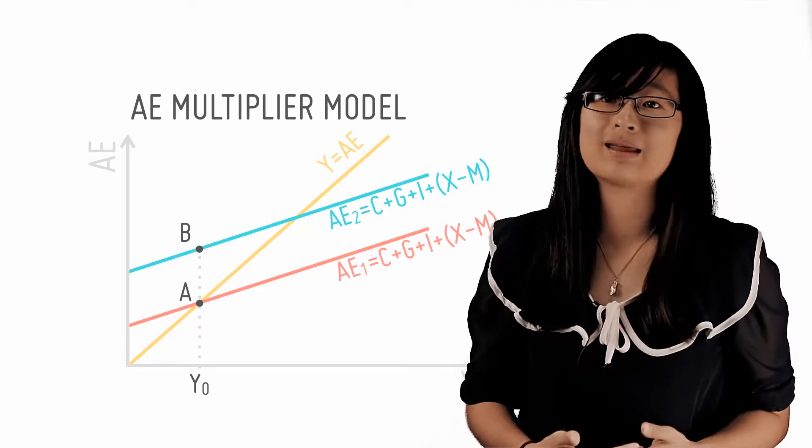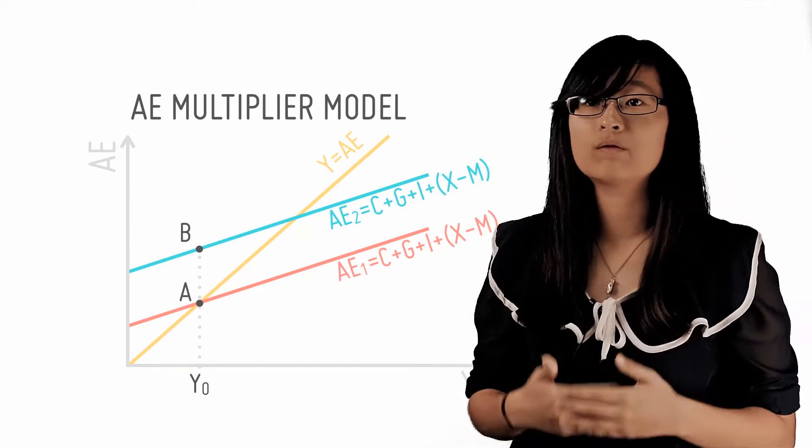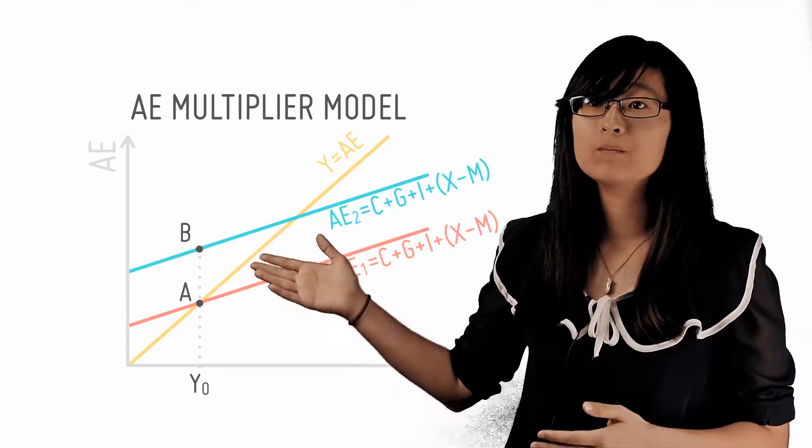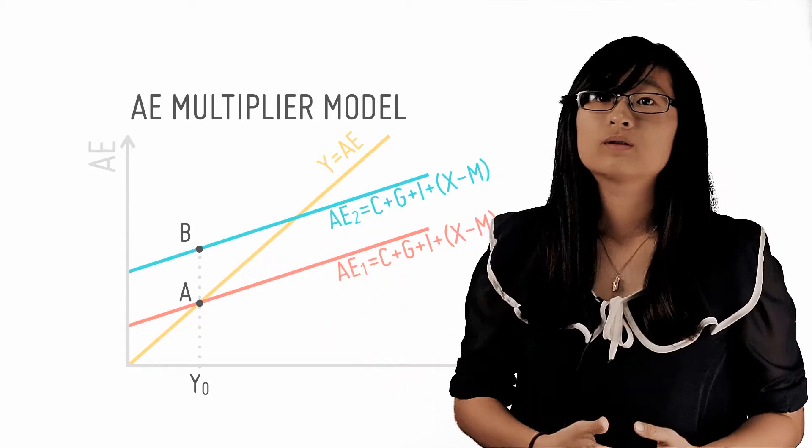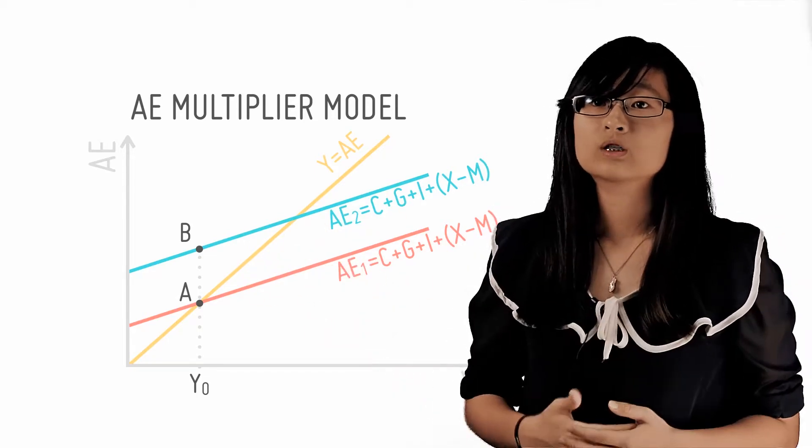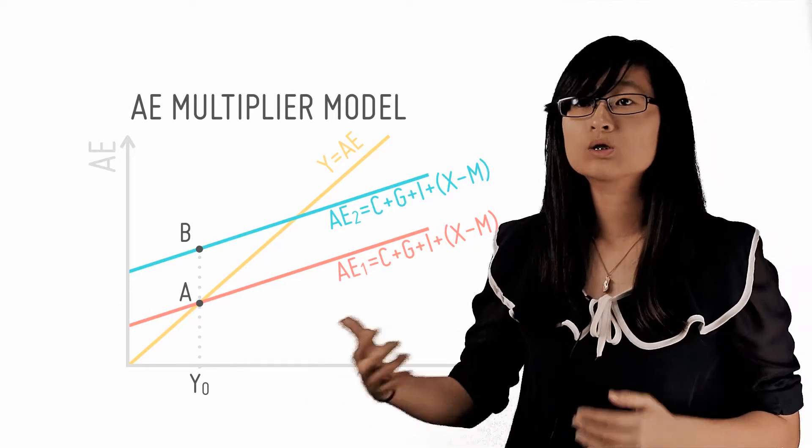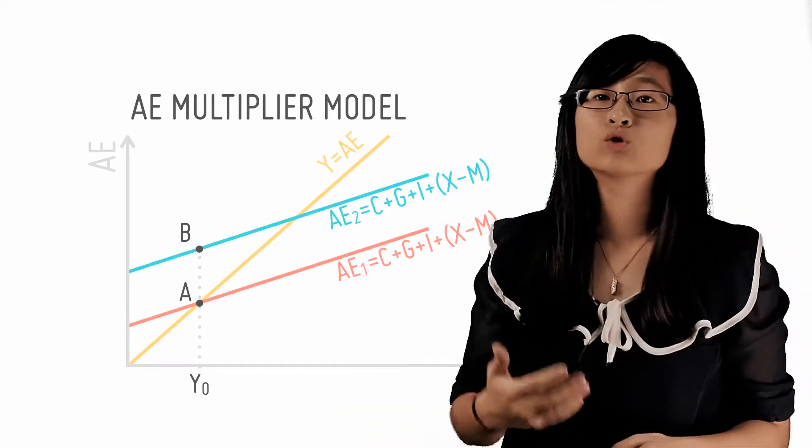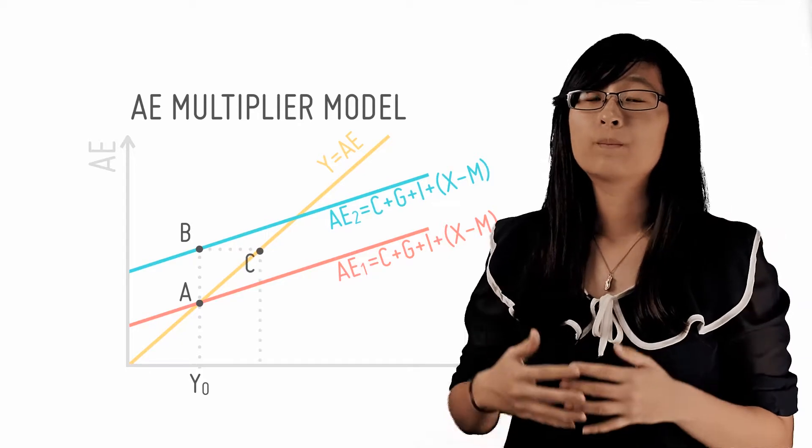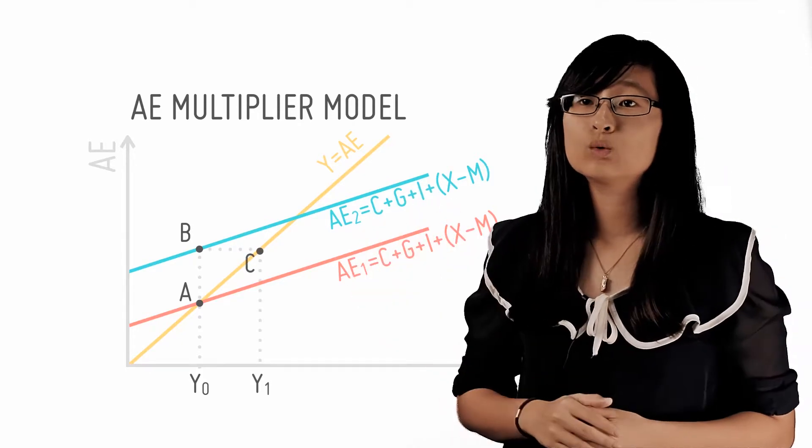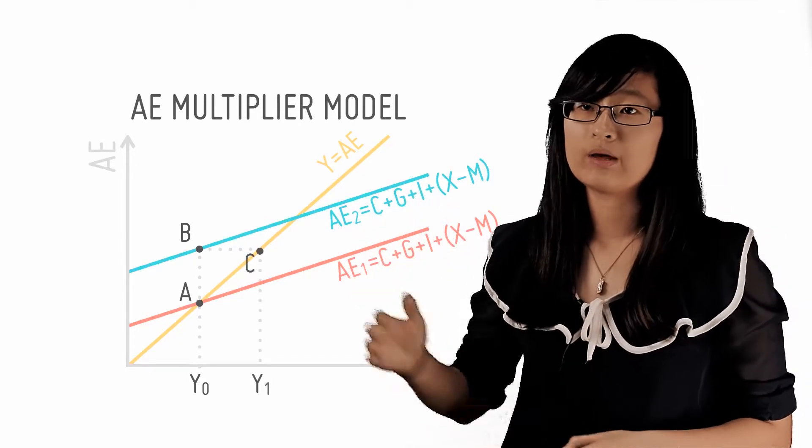We call this an unplanned disinvestment, and that's equal to the value of the excess expenditure, in this case AB. Now firms have an incentive to increase production in the next time period in order to restore their stocks and spare capacities to desired levels. They thus increase production by BC, which is equal to the unplanned disinvestment of AB.